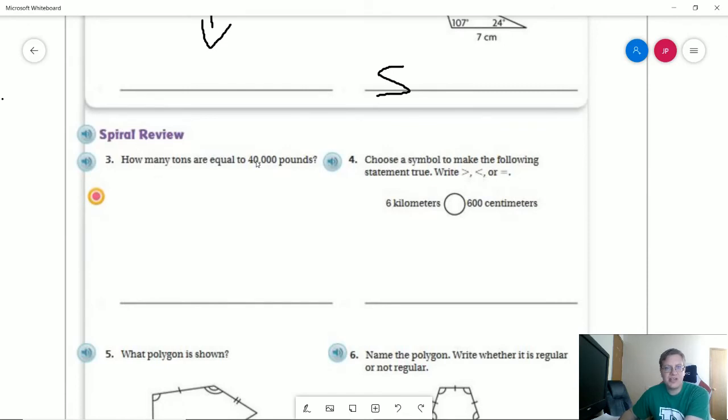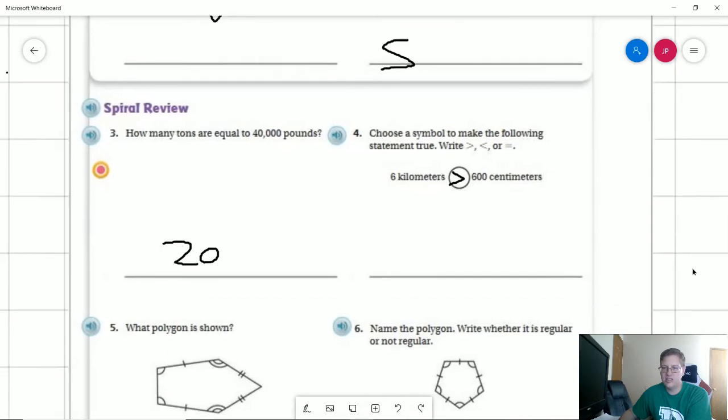How many tons are equal to 40,000 pounds? I can do this divided by 2,000 and that should give us 20. Number four, choose a symbol. So a kilometer is worth 1,000 meters. Centimeters are even smaller than that. So this is hilariously bigger than the other side.